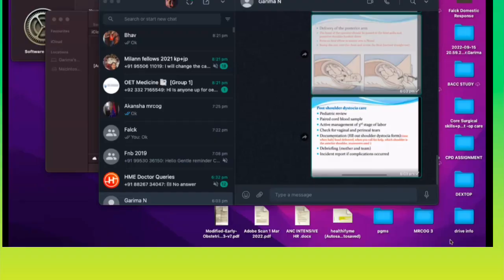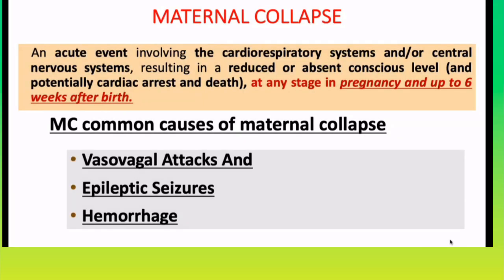Maternal collapse is basically an acute event involving the cardiorespiratory system and the CNS, resulting in reduced or absent consciousness level and potentially cardiac arrest and death. It involves two systems: CVS and CNS. This is considered maternal collapse if it occurs during pregnancy and up to six weeks after birth.